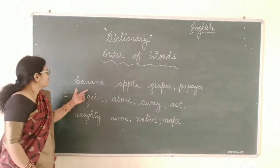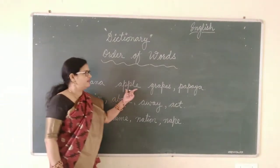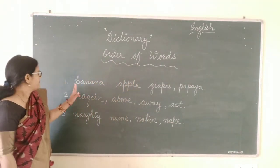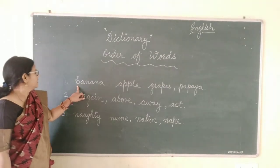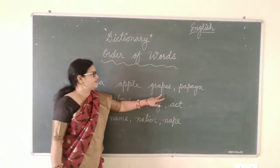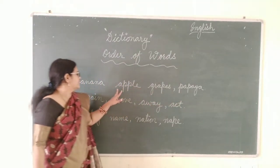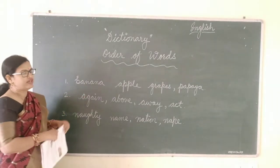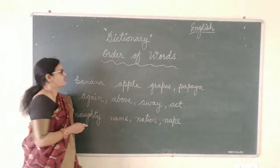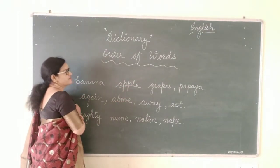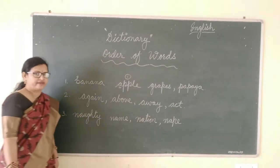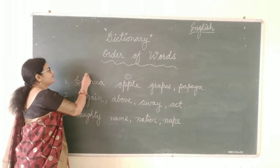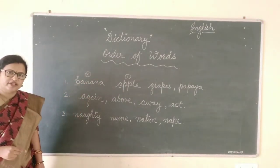I will show you some examples. The first one is: banana, apple, grapes, papaya. Shall we arrange them in alphabetical order? Banana, apple, grapes, and papaya. The first letters are all different. So how will we see which one comes first? We will look at the alphabetical order. In alphabetical order, A comes first, so apple will be number one. Then B comes after A, so banana will be second.